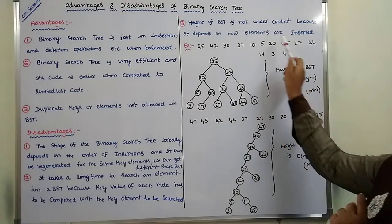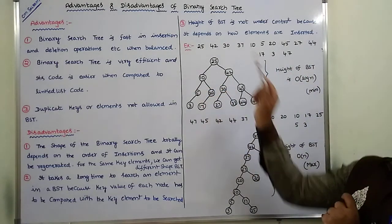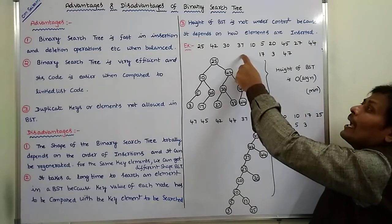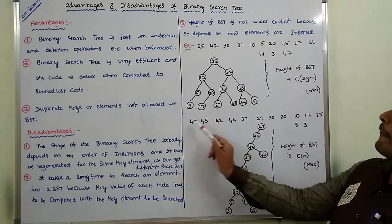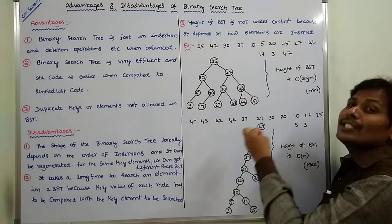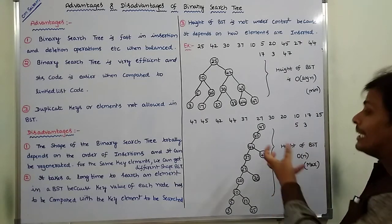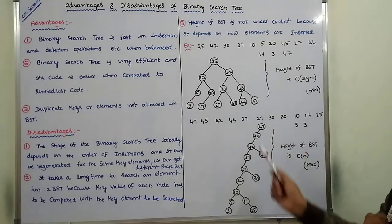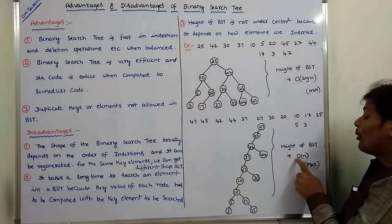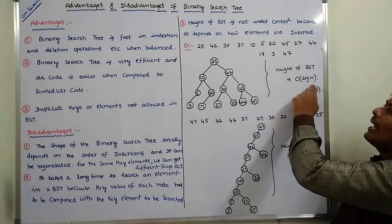For the same 13 elements, we are constructing a different binary search tree. The difference between them is the order of elements — here 47 is the root, there 25 is the root; here 45, there 42. We changed the order of insertions, and because of that the shape of the binary search tree is completely different. Here height is O(log n), and here height is O(n). Maximum height is O(n) and minimum height is O(log n).